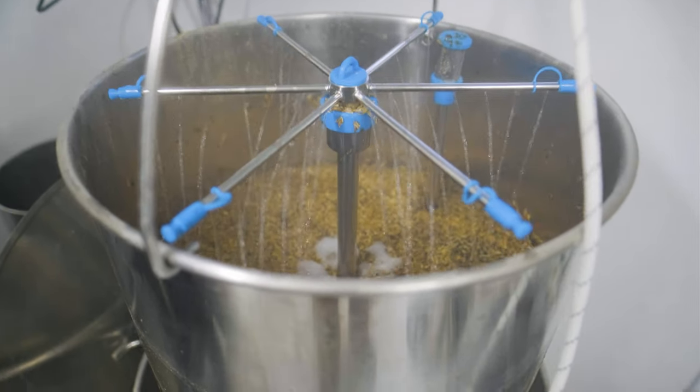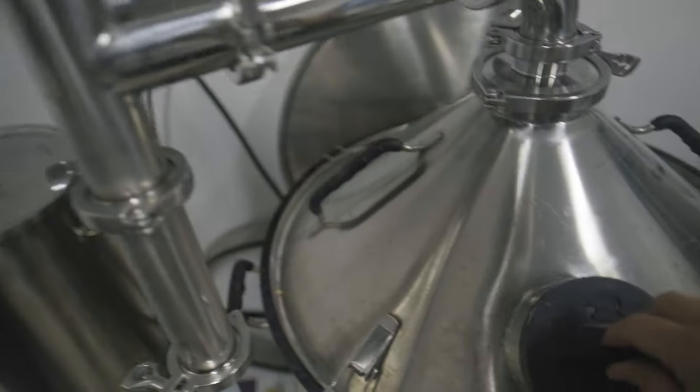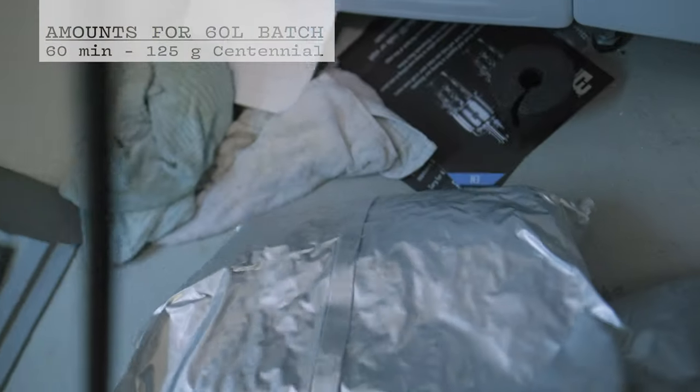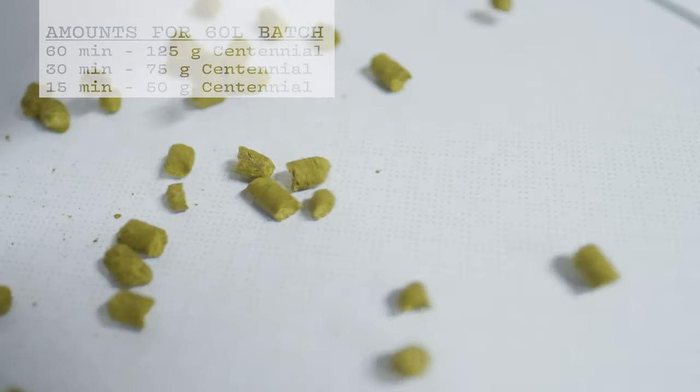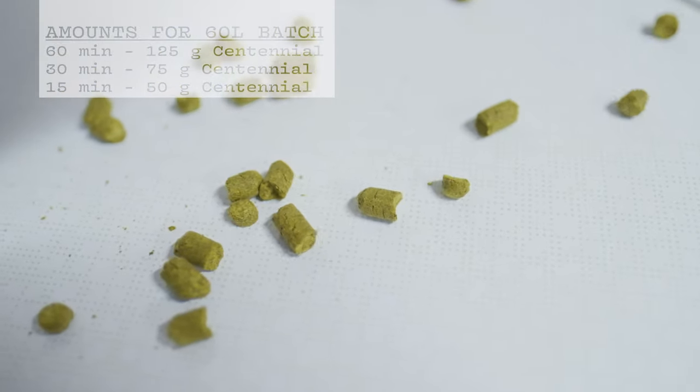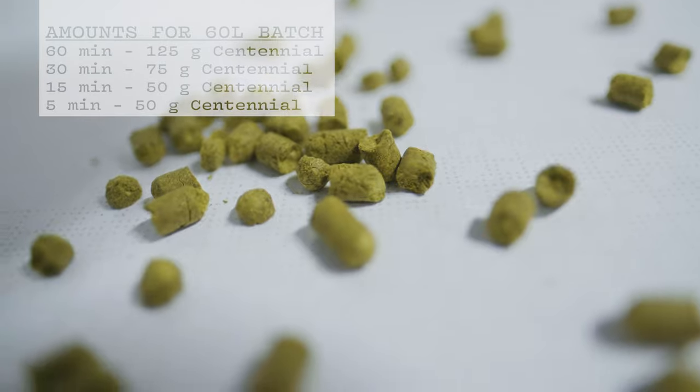After mashing for 75 minutes to get as much sugar as possible, we sparge at 75 degrees C and start heating to a boil. For the hops, I used Centennial all the way with 125 grams at 60 minutes, 75 grams at 30 minutes, 50 grams at 15 minutes to boil, and 50 grams with 5 minutes left in boil.